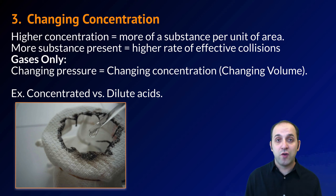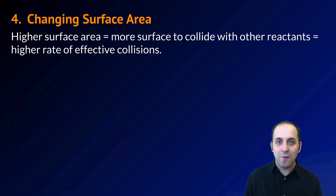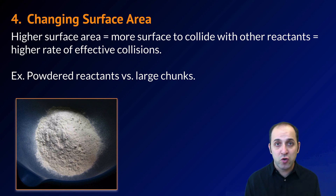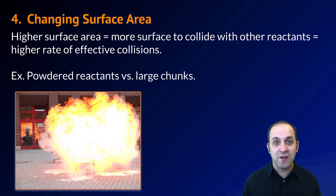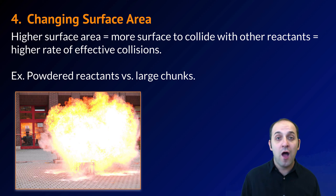Another major way we can affect the rate of collisions is by changing the surface area of our substance. A higher surface area in our reactants means there's more of the atoms exposed to react with each other, leading to more effective collisions. A good example is powdered reactants versus large chunks. What you see here is powdered flour, which is not something you'd think is particularly dangerous. However, if you spread that powder into the air and then light a match, you can get a massive explosion. This was actually a huge problem in bakeries in the early part of the 20th century — as industrialization took over, more and more flour was being powdered and put into the air, and there were many bakery fires as a result. The surface area of the particulate matter in the atmosphere was high enough that when a spark was introduced, all of that powder would just ignite and explode all at once — incredibly dangerous. That's the effect of changing the surface area on the rate of the reaction.